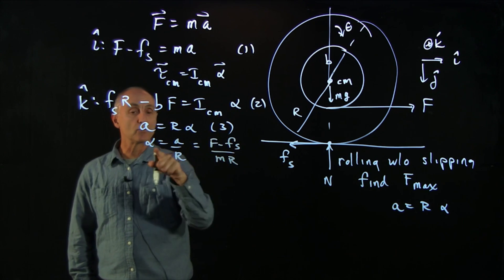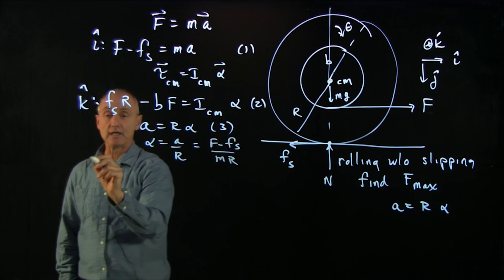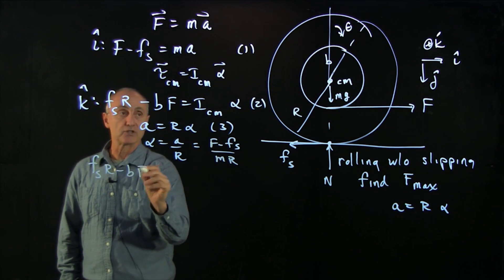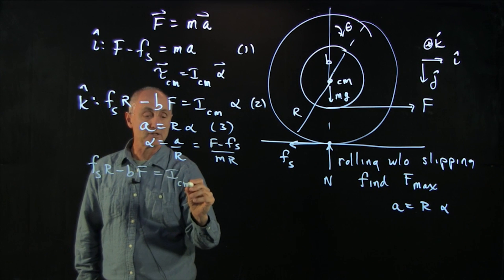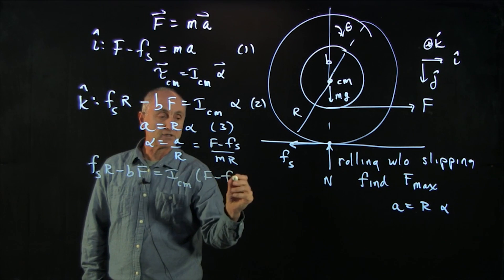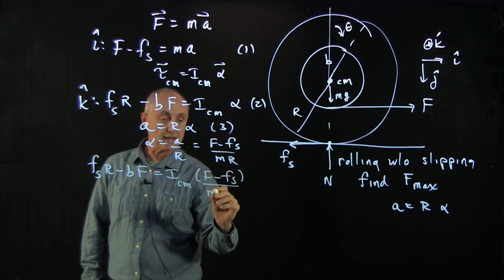So I can replace the alpha in this equation. And I get fs r minus bf is I cm f minus fs over m r.